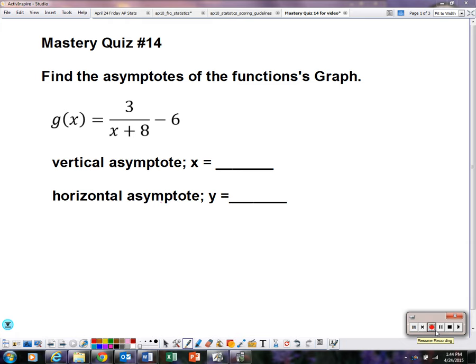Advanced Algebra Mastery Quiz number 14. Find the asymptotes of the function's graph. So here we have g of x equals 3 over x plus 8 minus 6.